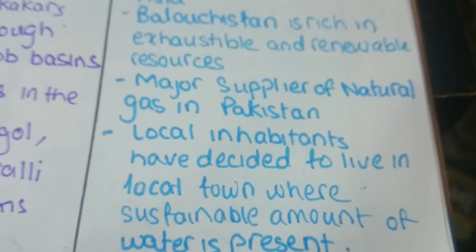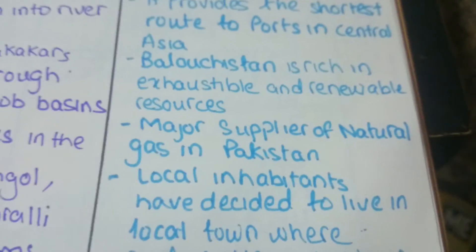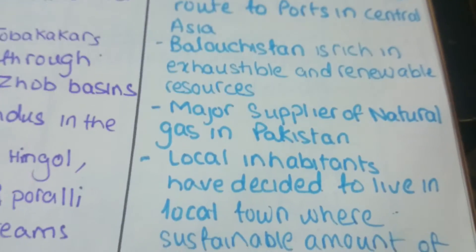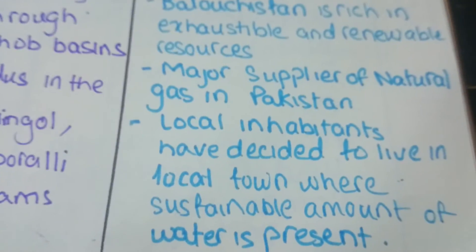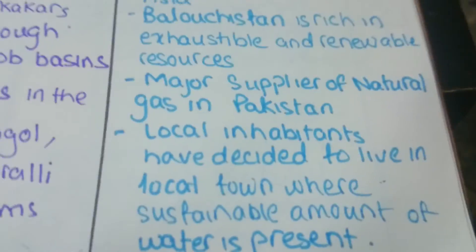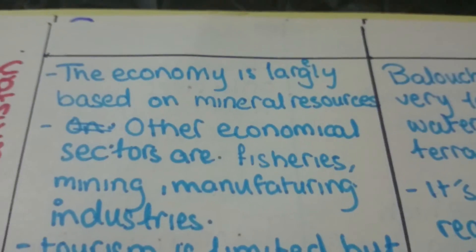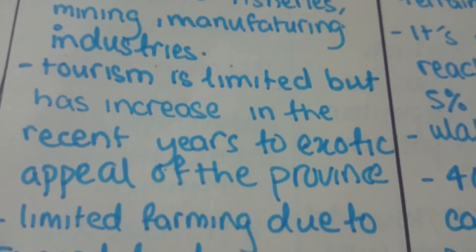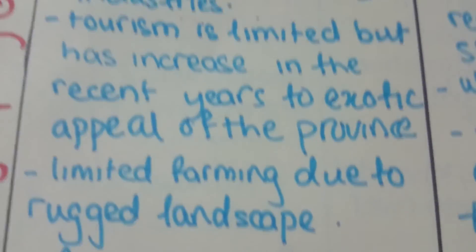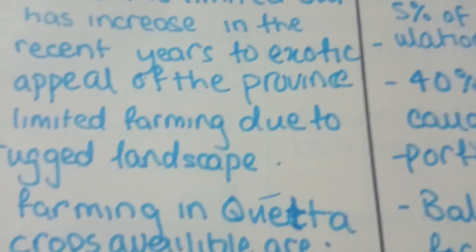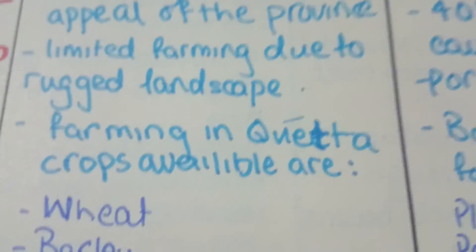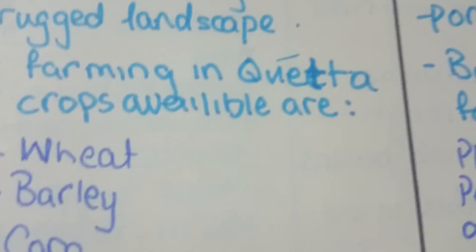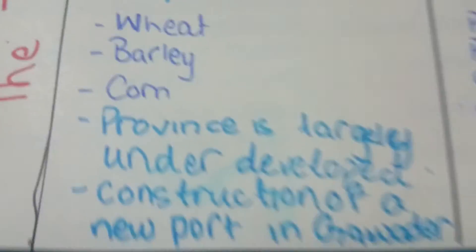Balochistan is rich in exhaustible and renewable resources, with major supplies of natural gas in Pakistan. The major gas field in Balochistan is Sui. The economy is largely based on mineral resources; other sectors include fishery, mining, and manufacturing. Tourism is limited but has increased in recent years due to the exotic appeal of the province. Farming is limited due to rugged landscape, though Quetta has available farmland with main crops of wheat, barley, and corn.